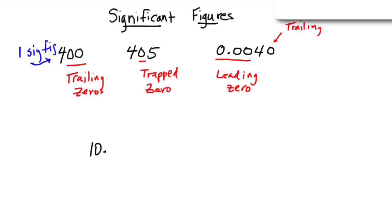One sig fig, I'm just going to abbreviate that SF. Trapped zeros always count, they always count. So in this case I would have three significant figures: one, two, three. Trapped zeros always count.